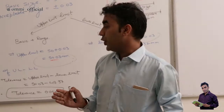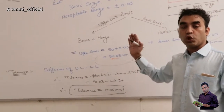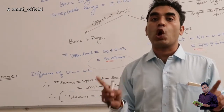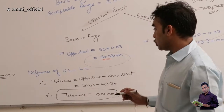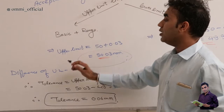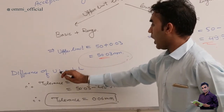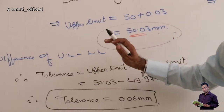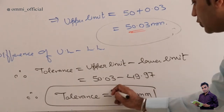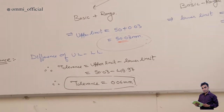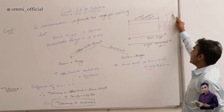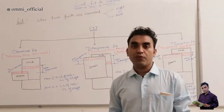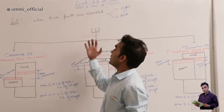The upper limit and lower limit define the range in which we have to sustain. The next topic is tolerance. The difference between the upper limit and lower limit gives you the tolerance, which is the total working zone. So for our example, the upper limit is 50.03 and the lower limit is 49.97, giving a tolerance of 0.06 mm. This range, from the largest to the smallest acceptable dimension, is the tolerance.